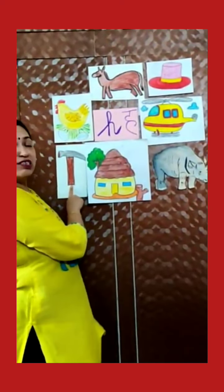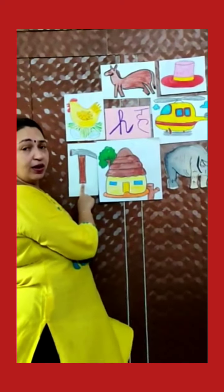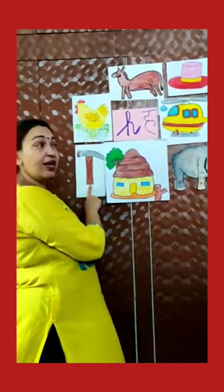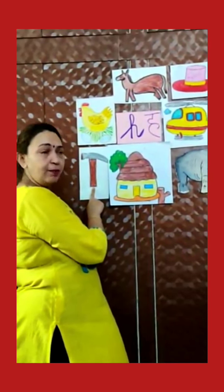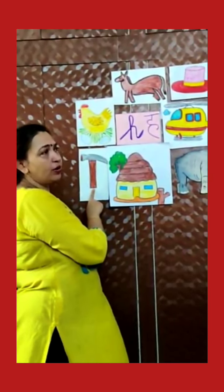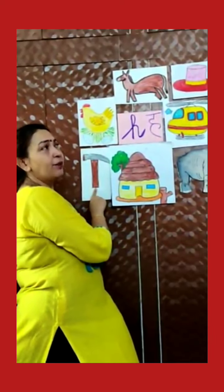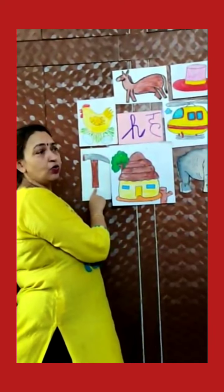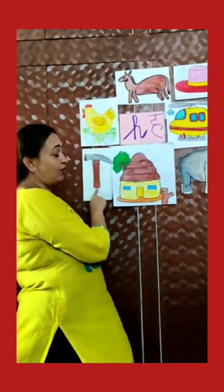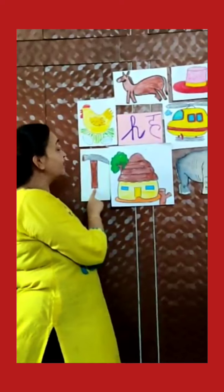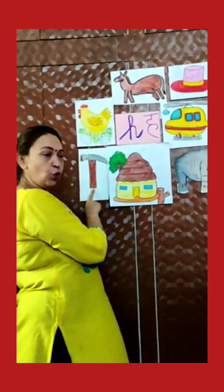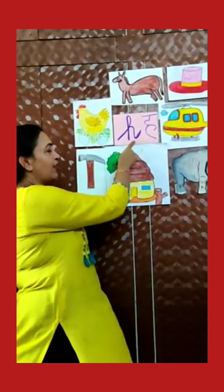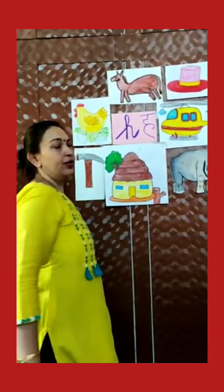H for hippo. H for hammer. When we need to put in a nail — heel lagana hota hai — then we use a hammer. Hammer is a tool. Ye ek kaam ka tool hota hai. H for hammer. Now what is this?